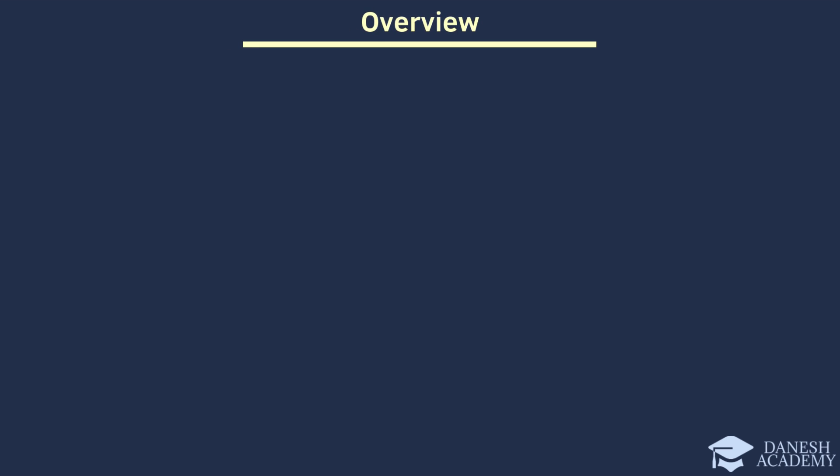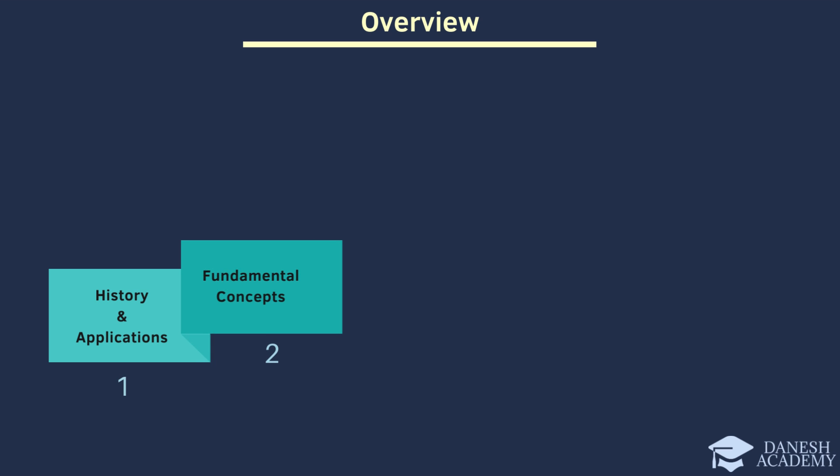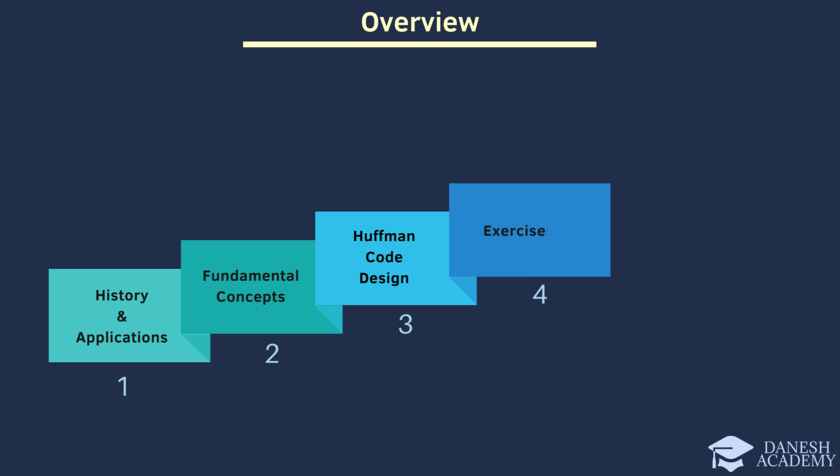Let's explore how this ingenious method works and why it's so important in the world of data compression. In this tutorial, we will begin by discussing the history and real-world applications of Huffman coding. We will also talk about essential concepts like average codeword length, prefix code, and compression. Then, we will explore the process of creating Huffman codes. In the next step, for those who want to learn more, I have included some exercises. And finally, I have created the Python and MATLAB codes and uploaded them to my GitHub repository. You can find the link in the description below.